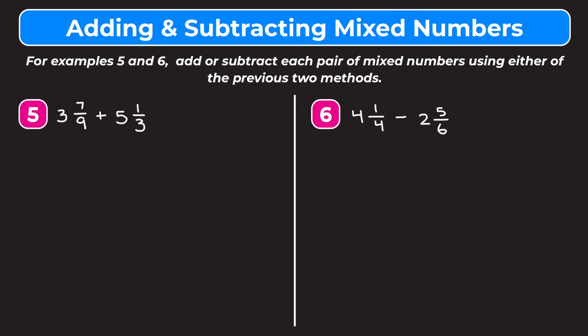Number 5 says 3 and 7 ninths plus 5 and 1 third. I'm going to use the second method, which is adding the whole numbers and the fractions separately. I want to keep the whole numbers the same and find a common denominator for 9 and 3. The least common multiple of 9 and 3 is 9. My first fraction stays as it is and I need to turn 1 third into something with a denominator of 9. To get from 3 to 9, I multiply by 3, so I multiply my numerator by 3. 1 times 3 is just 3. So 5 and 1 third is the same as 5 and 3 ninths. Now I add the whole number parts: 3 plus 5 gives me 8. And I add the fraction parts: 7 ninths plus 3 ninths is 10 ninths. So I have 8 and 10 ninths.